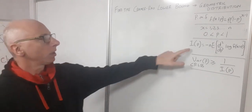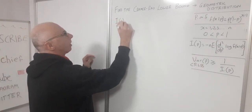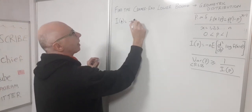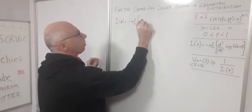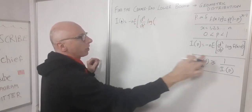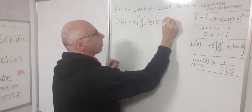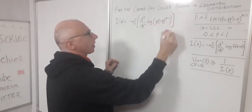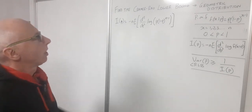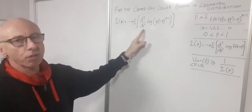Let's calculate the Fisher's information function. I of p equals negative n times the expectation of the second derivative with respect to p of the log of our function, which is p times (1 minus p) to the x minus 1. That's our setup to find the Cramér-Rao lower bound. Now let's take the log of this function and then take the derivatives.